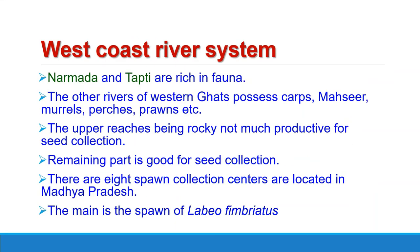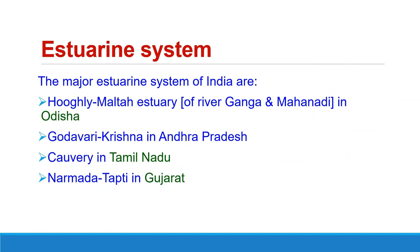The West Coast river system drains the narrow belt of peninsular India west of the Western Ghats and includes the basins of Narmada and Tapti. Both these rivers are rich in fauna. River Narmada contributes to spawn collection of Indian major carps and Mahaseers; there are about 8 spawn collection centers in Madhya Pradesh, and the main spawn is of Labeo fimbriatus. The Tapti river has no major centers for seed collection. Other rivers originating in the Western Ghats possess carps, catfishes, Mahaseer, murals, perches, and prawns, but their upper rocky stretches are unproductive for seed collection, while the remaining parts are good.